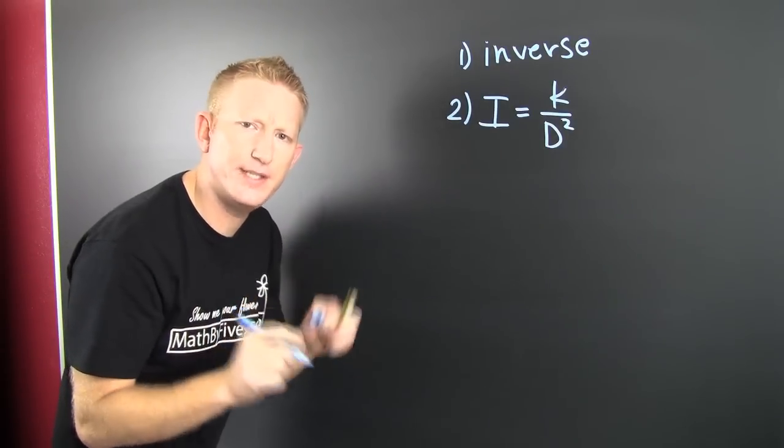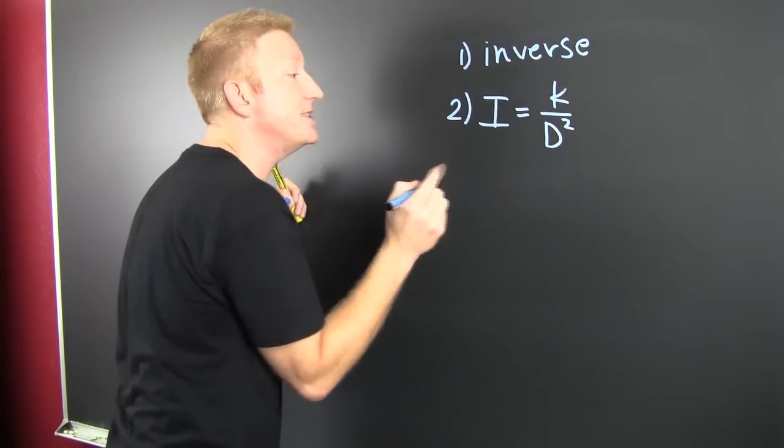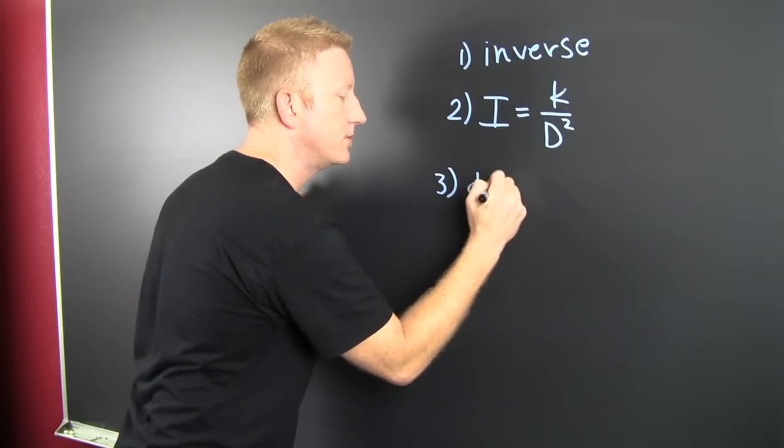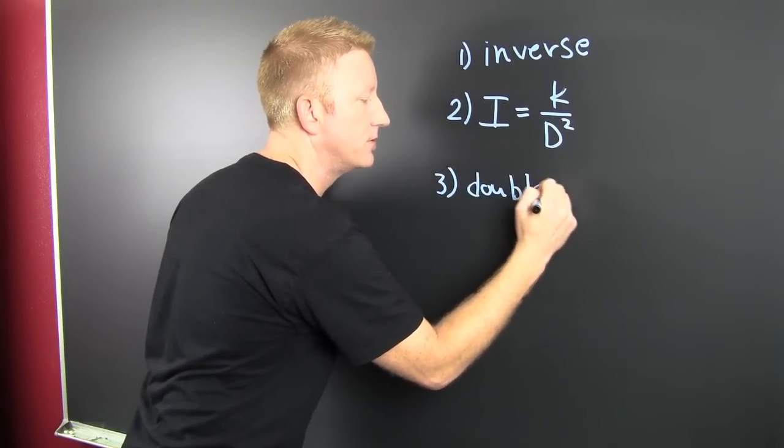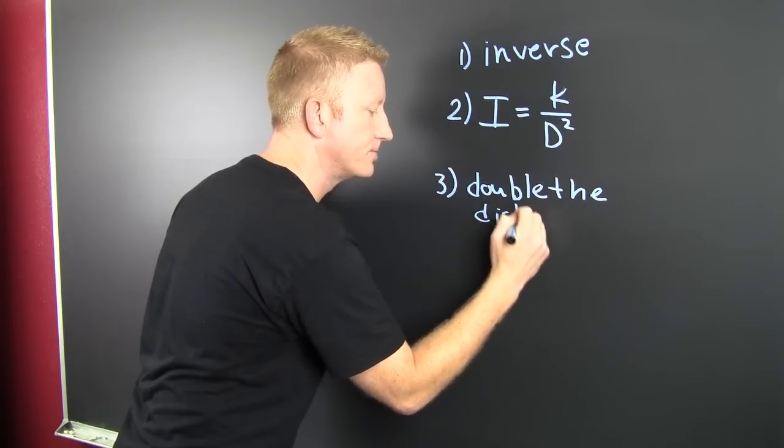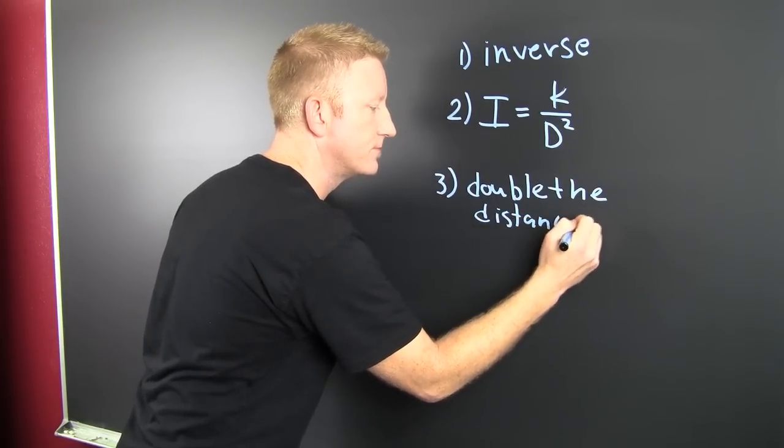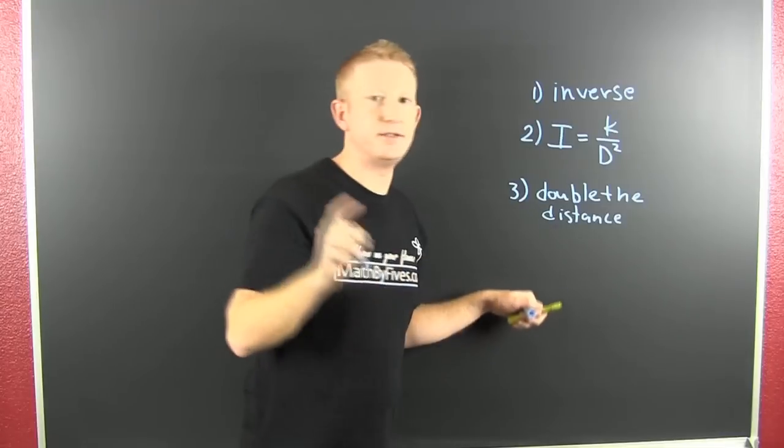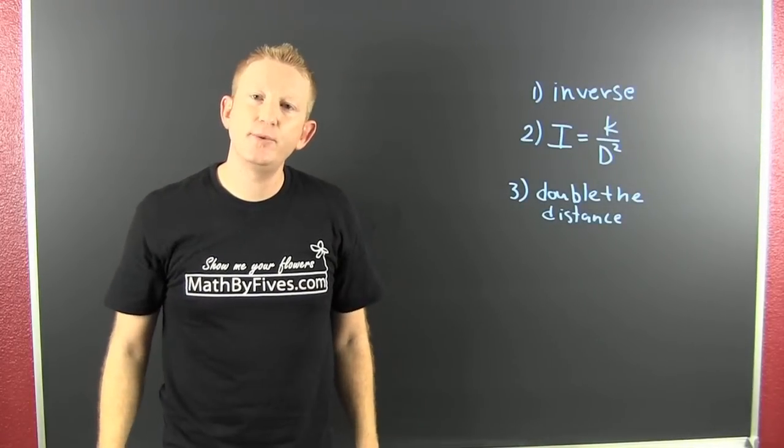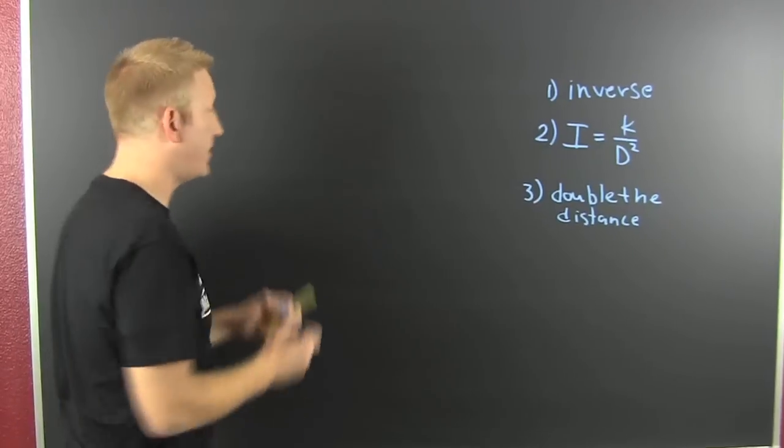So here they ask you something a little bit different. What? They say what happens when you double the distance? He's going the distance. I want to see what happens to the intensity when I double my distance, when I put it twice as far. How does this light travel?